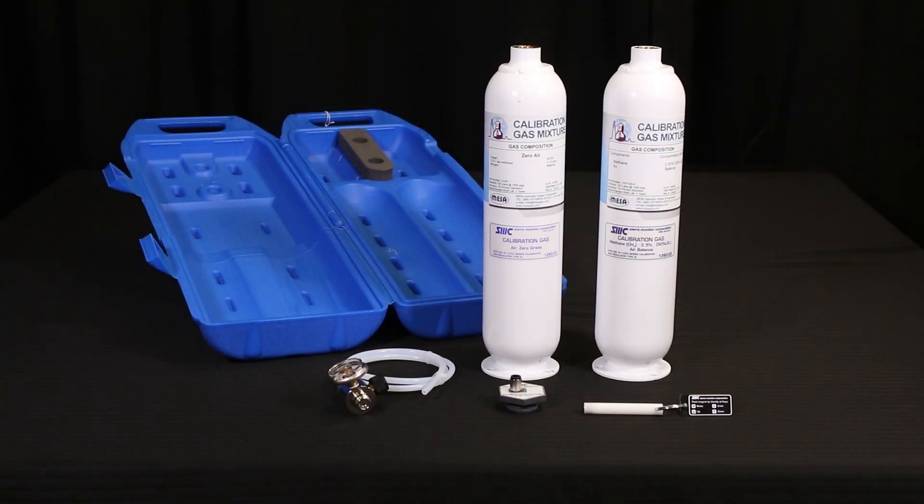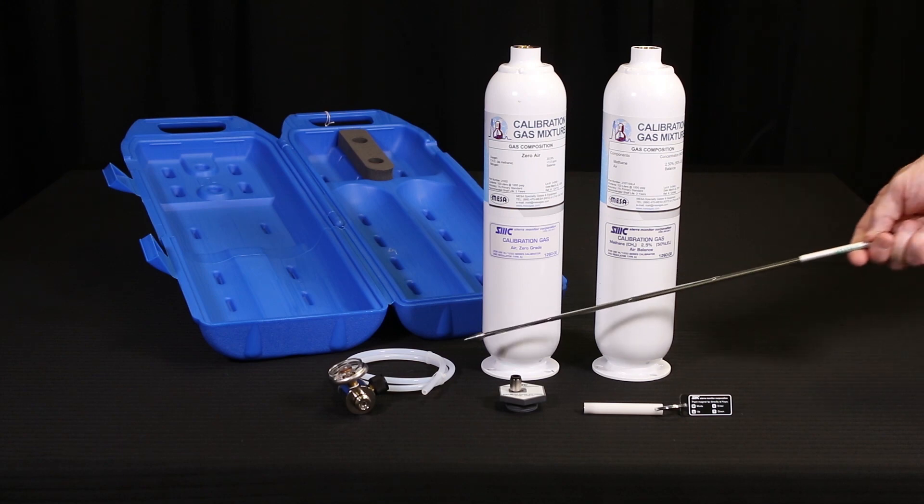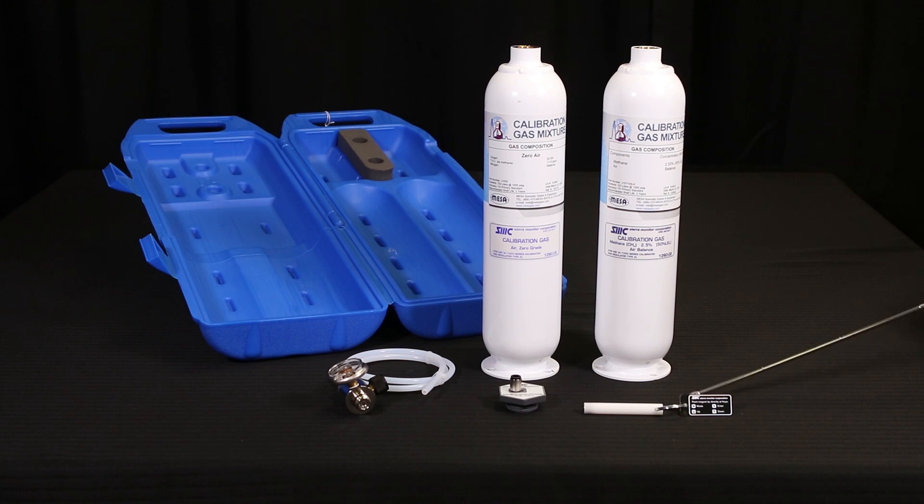The following tools are required to carry out this procedure on the combustible gas detector: the 5100-28-IT gas detector, type A system calibrator kit, regulator and delivery tube, magnetic wand, CH4 cylinder,